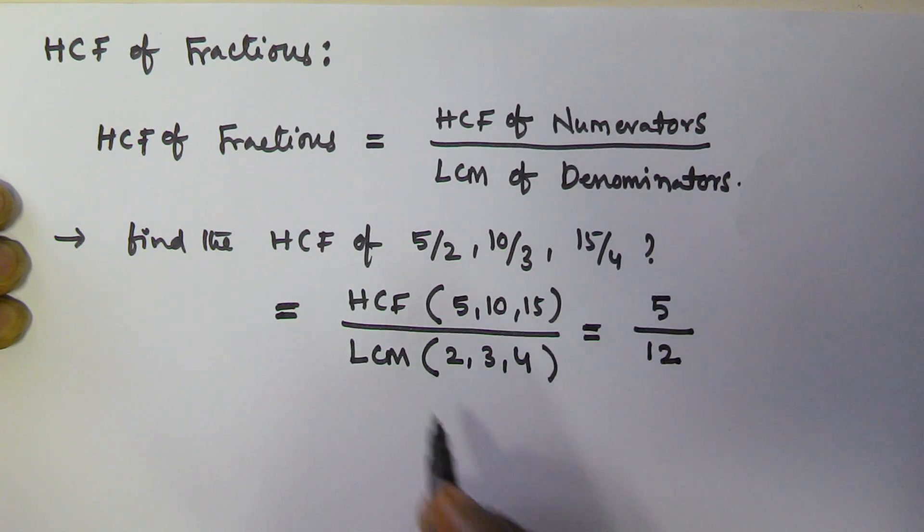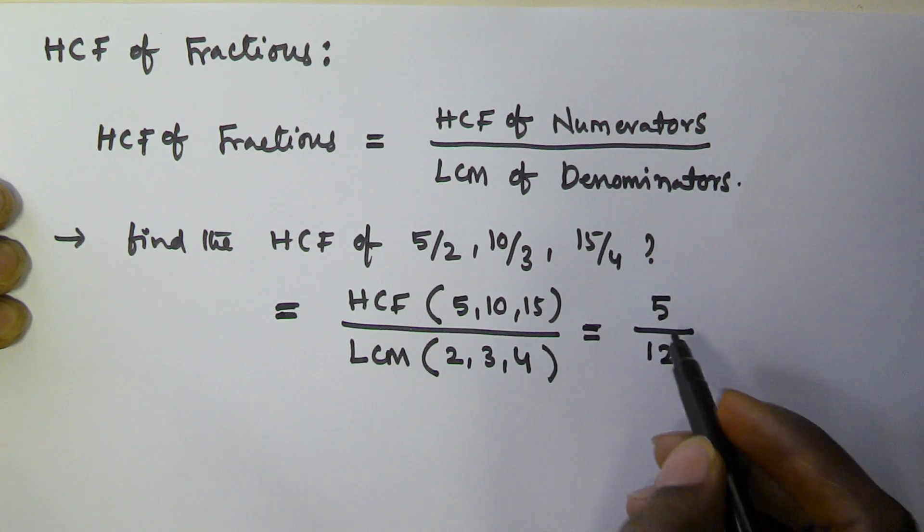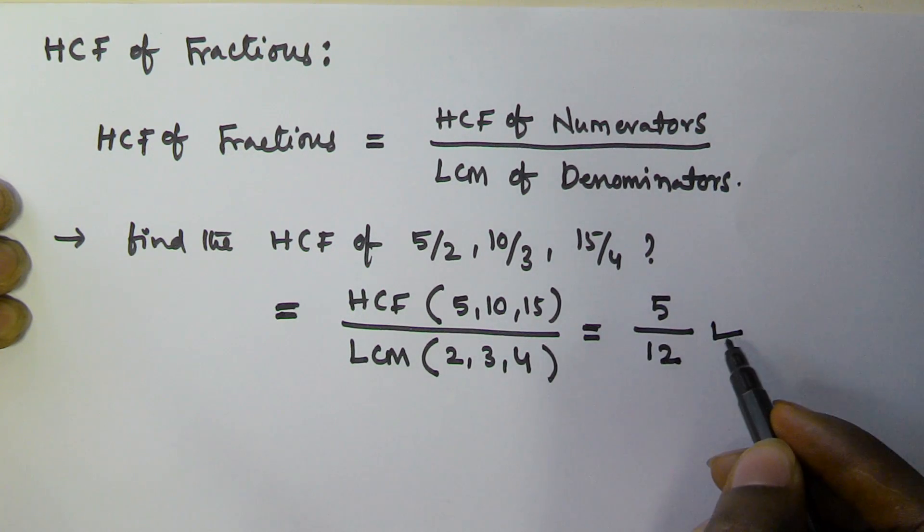So then the HCF of 5 by 2, 10 by 3, 15 by 4 is equivalent to 5 by 12.